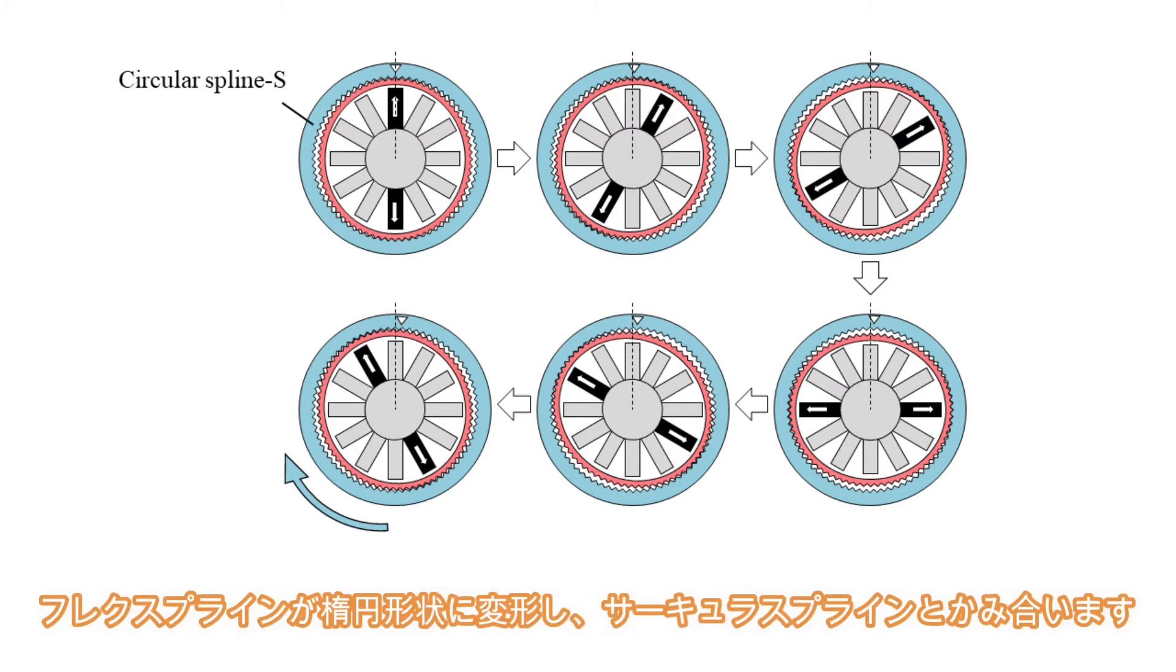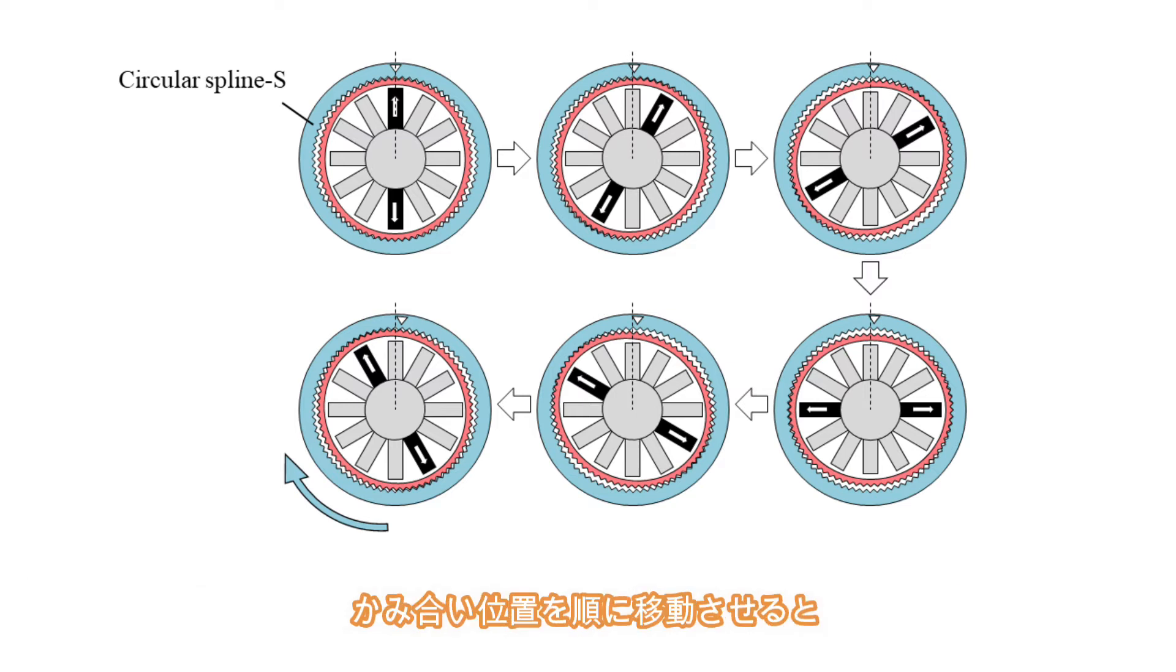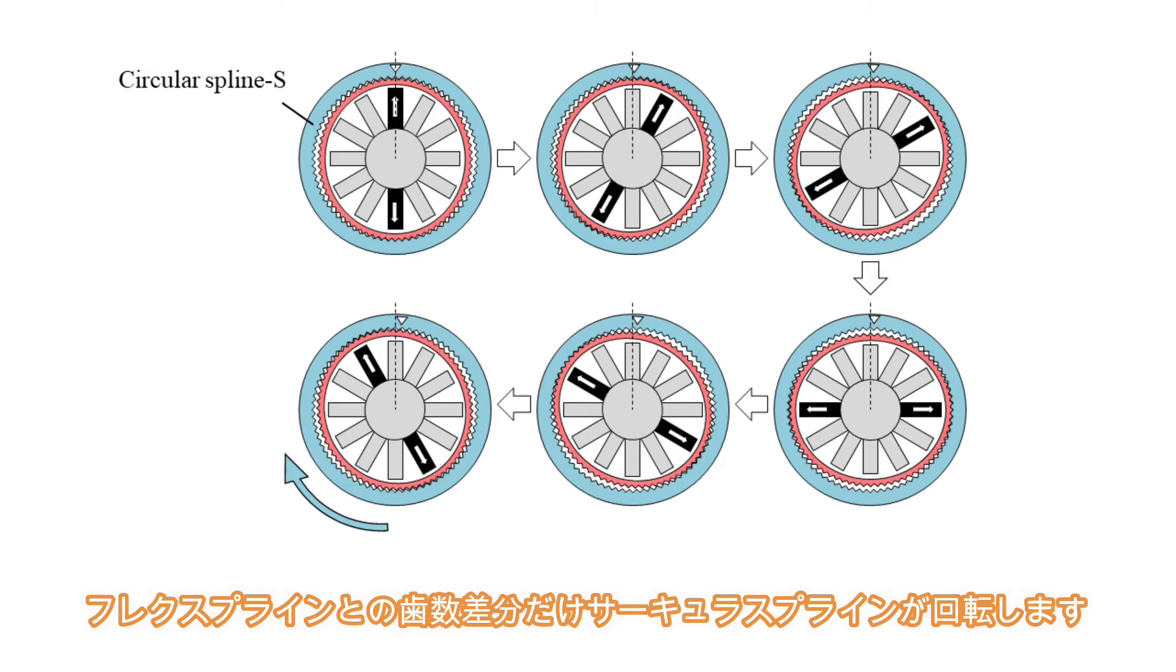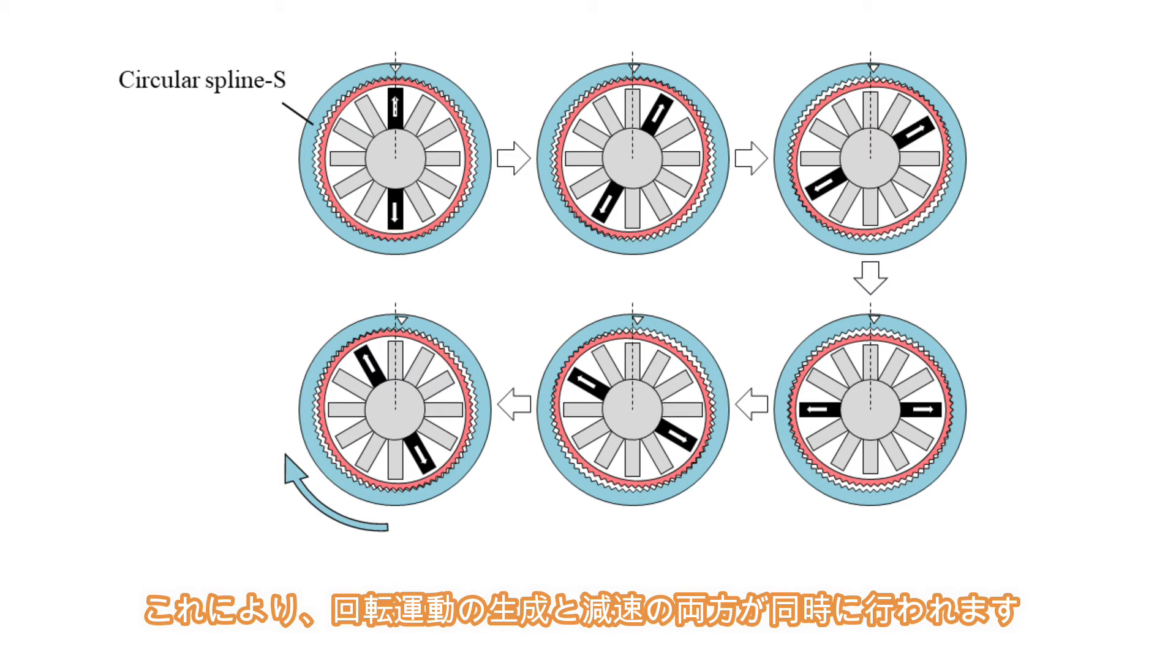By operating the opposing linear actuators, the flex spline is deformed into an oval shape and engages with the circular spline. When the engagement positions are moved in turn, the circular spline rotates by the tooth number difference from the flex spline.